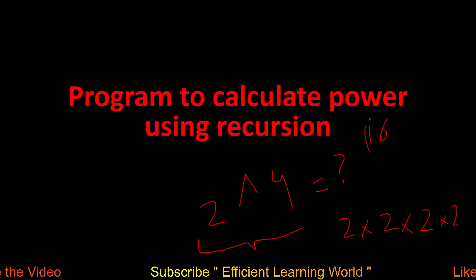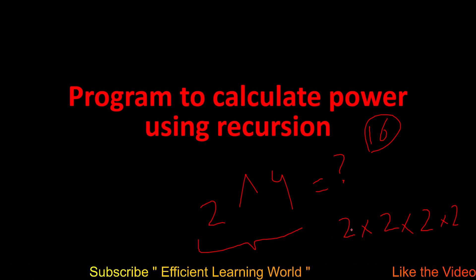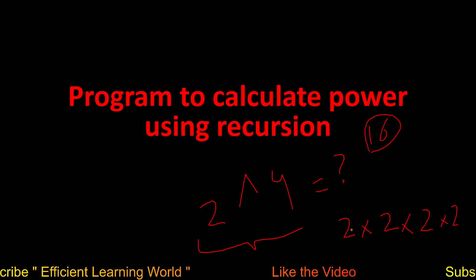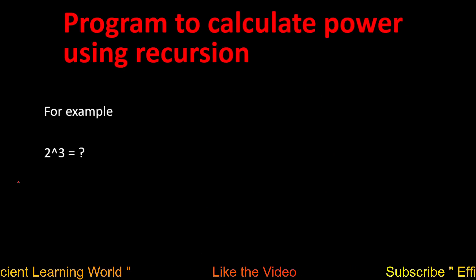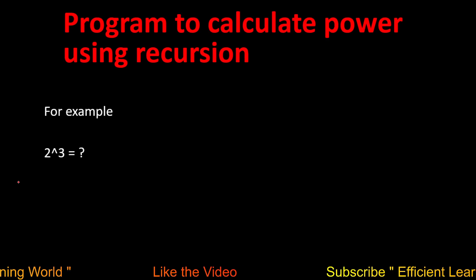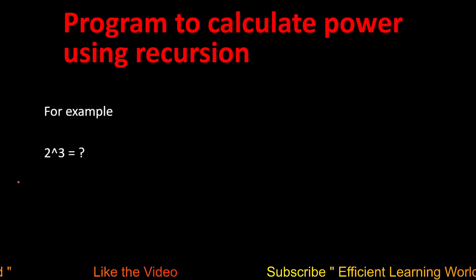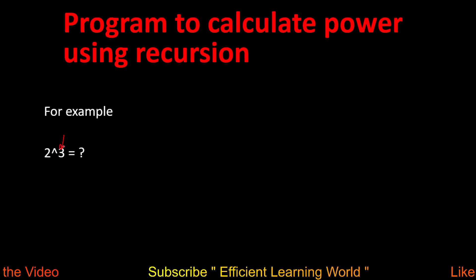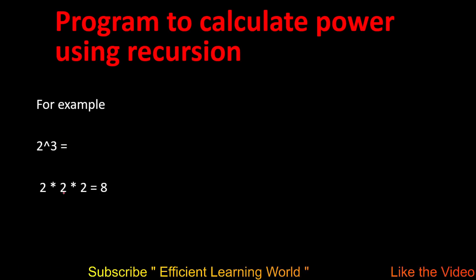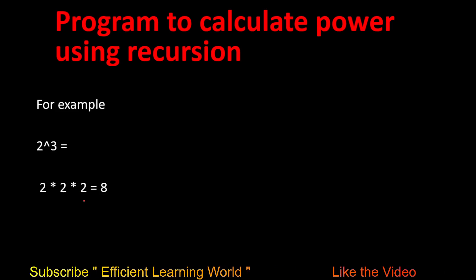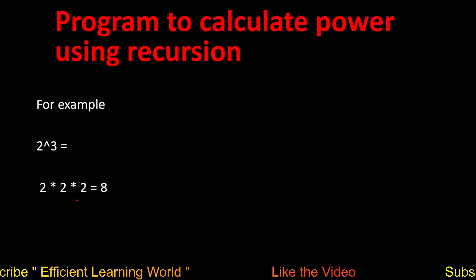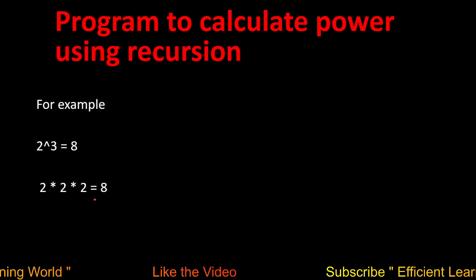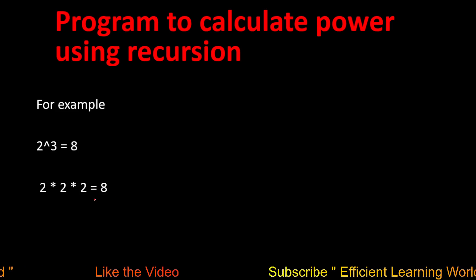I want to calculate 16 — that is, 2 raised to power 4 — using a recursion program. Similarly, for 2 raised to power 3, I want to multiply 2 by itself 3 times. 2×2×2 gives the output 8, so 2 raised to power 3 equals 8.